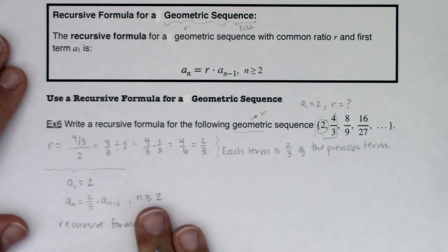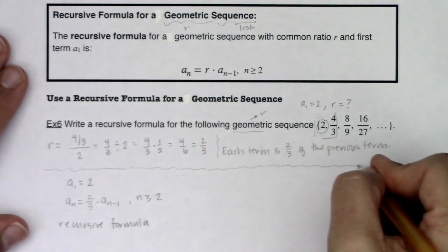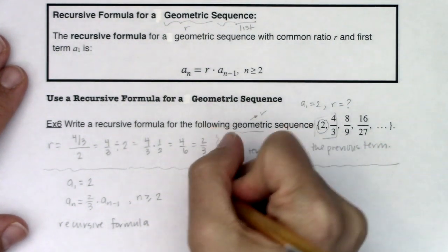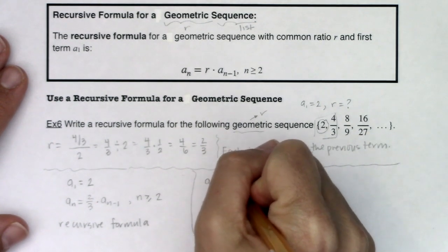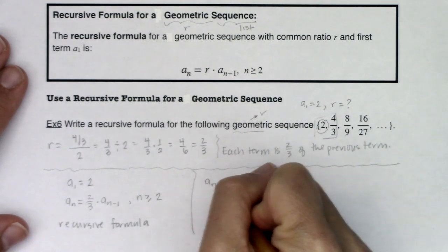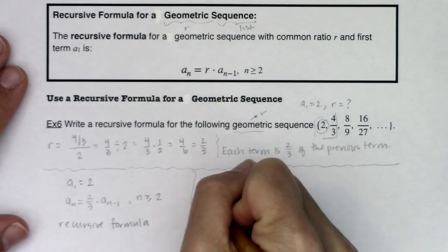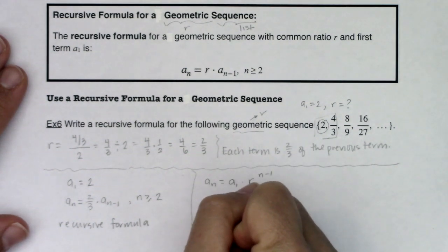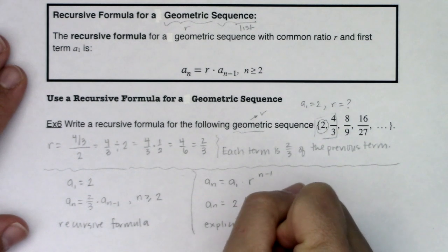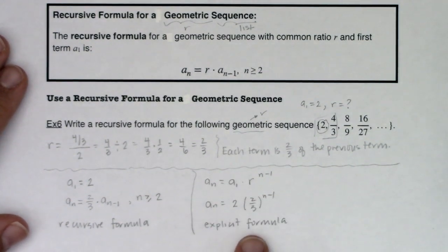Now I want to just compare and contrast that with the explicit formula. If I did this the explicit way, I would say a sub n was a sub 1 times r to the n minus 1. So here I would say this was 2 times 2 thirds to the n minus 1. This is the explicit formula. Now, our problem did not ask us to find this. I'm just doing this for fun, but I do want you to see it in action. I do want you to see it working.